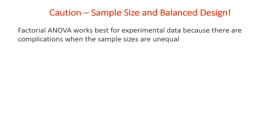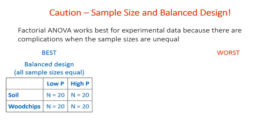Here's an important caution about sample size. Factorial ANOVA gets complicated when sample sizes are unequal, so it really works best for experimental data where you can control and ensure every combination has the same sample size. That's the best-case scenario: the balanced design, where all sample sizes are equal — for example, all combinations of independent variable factors have 20 samples.